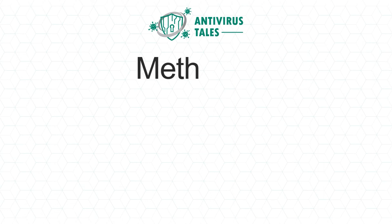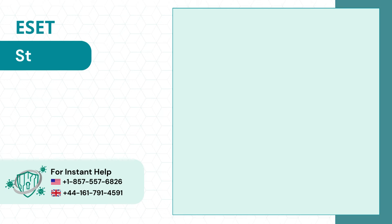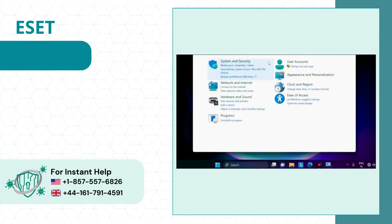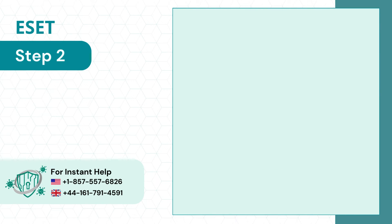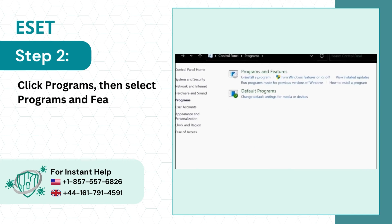Method 2: From Control Panel. Step 1: Click the Windows search bar, search Control Panel and open it. Step 2: Click Programs, then select Programs and Features.